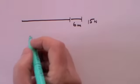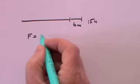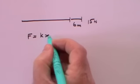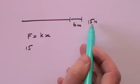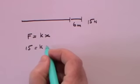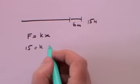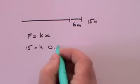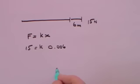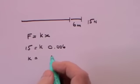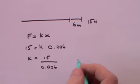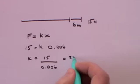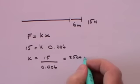Hooke's law tells us that force is equal to the stiffness constant k times the extension. We know that when the force is 15 newtons the extension is 6 millimetres, which is 0.006 metres. That immediately gives us the stiffness constant: 15 divided by 0.006, which comes out at 2,500 newtons per metre.